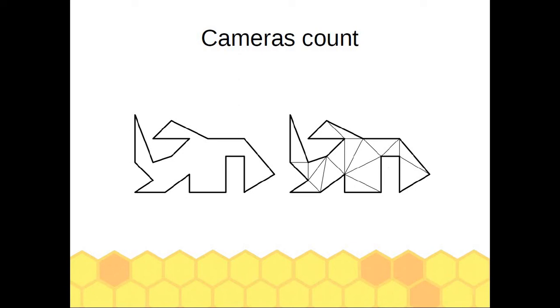If you can triangulate the polygon like this, by placing one camera in each triangle it will guard the entire polygon. But is this a good solution? How many triangles can we make out of this polygon?